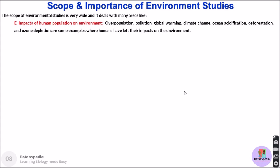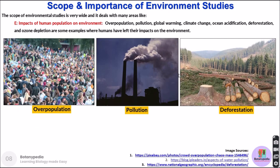There is another scope of environmental studies that deals with the impacts of human population growth on the environment, which is mostly related to overpopulation. Overpopulation leads to problems such as pollution, global warming, climate change, ocean acidification, deforestation, and ozone layer depletion. These pictures show how the human population is increasing day by day, how pollution is accumulating, and how industrialization has led to increased deforestation.